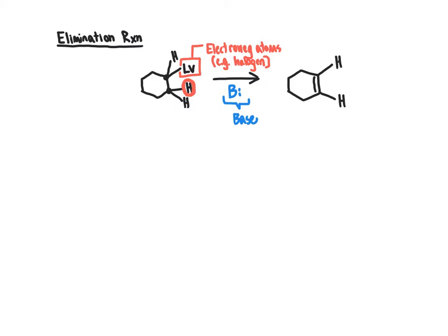So we end up with that alkene as a product. The base grabs the proton from the organic reactant, giving the conjugate acid as another product. And the other product of this reaction is the leaving group that has broken away — LV with a lone pair, taking the two electrons from the covalent bond with it when it goes, picking up an extra lone pair of electrons and very often a formal charge as well. This is the general crux of what's happening during an elimination reaction.